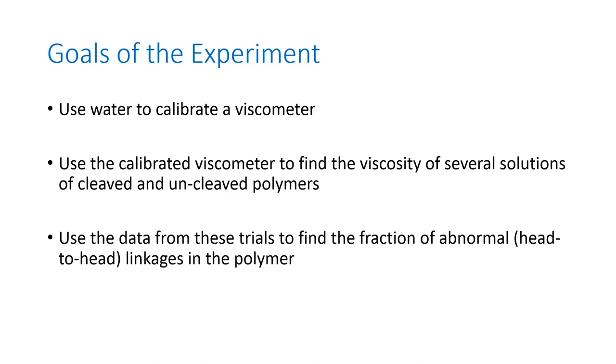So a normal polymer forms head-to-tail, head-to-tail, head-to-tail from the subunits, and some fraction of those linkages are backwards, head-to-head linkages. So you're going to find that fraction using your data.